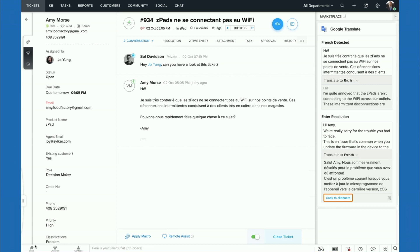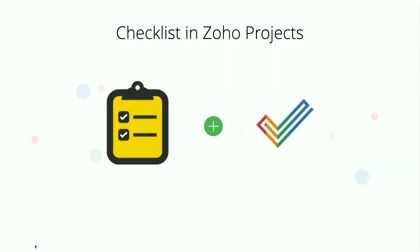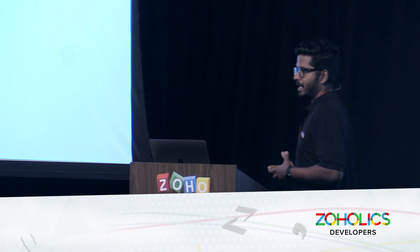Another example is Checklist in Zoho Projects. Unlike the previous example where Google Translate was a third-party app, the checklist is not a third-party app — it is simply functionality added to Zoho Projects. Zoho Projects has a task module where you can manage tasks. A task owner may want a list of work items that need to be handled before completing a task, but creating subtasks goes through the usual task management process — so they end up maintaining a separate list elsewhere.